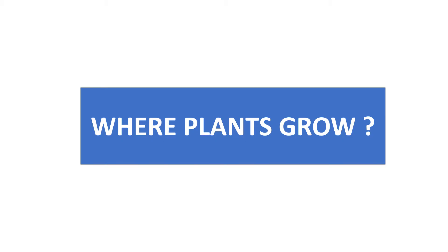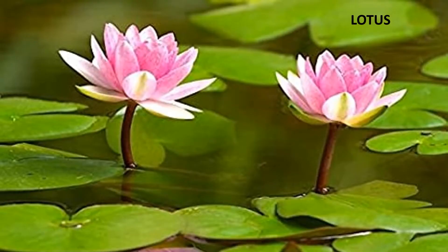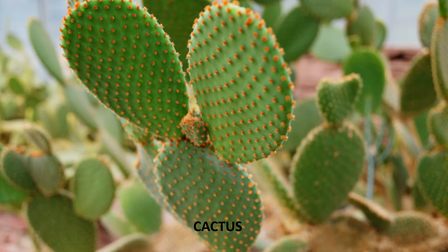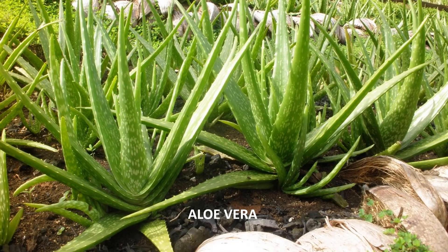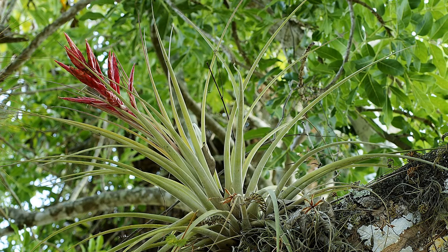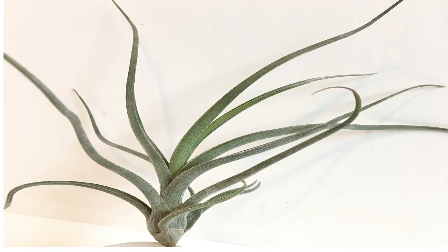Some plants grow on land and some plants grow in water, like lotus and water hyacinth. Some plants like cactus and aloe vera grow in the desert. Some plants like tillandsia grow on tree branches, barks, and bare rocks. They don't have proper roots and get water from the air. They are called air plants.